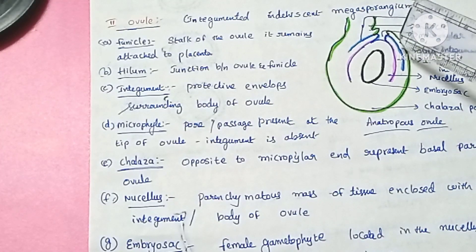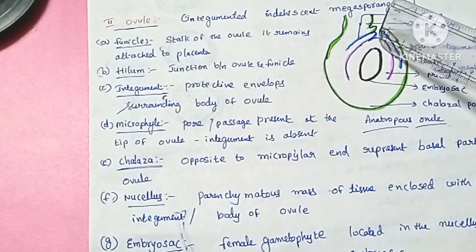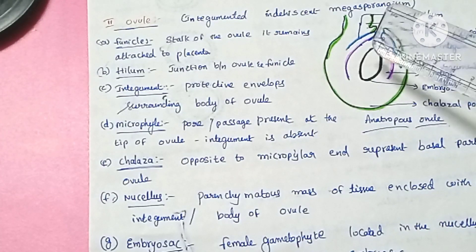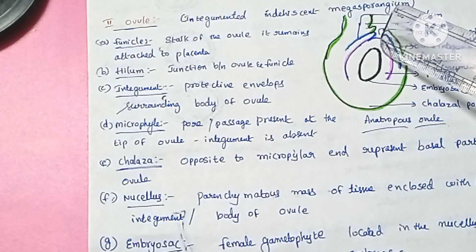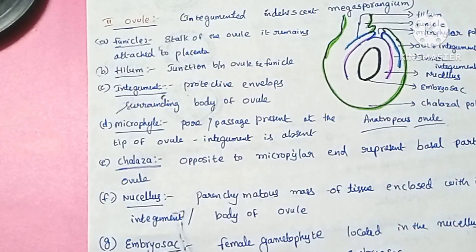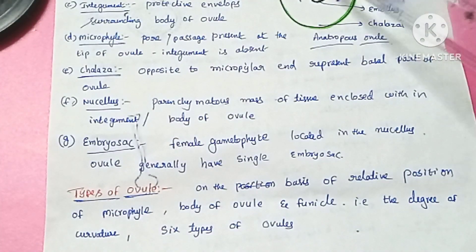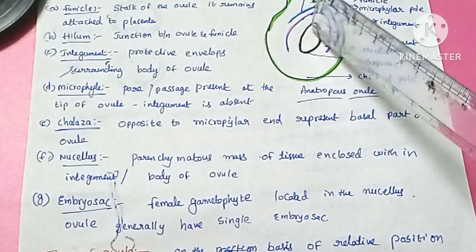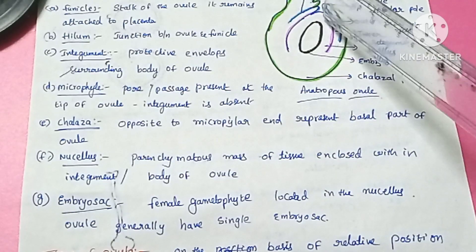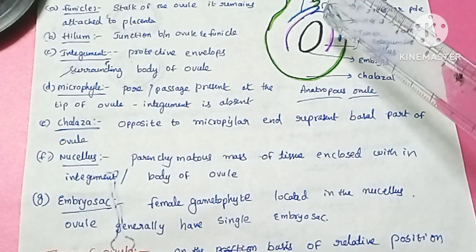The nucellus is the body of the ovule, surrounded by the two integuments. The body of the ovule, or nucellus, is formed from a parenchymatous mass of tissue. Inside the nucellus is the embryo sac, also called the female gametophyte. Generally, each ovule has a single embryo sac.